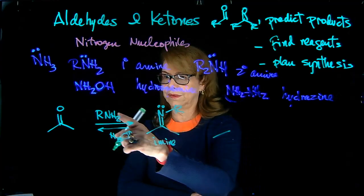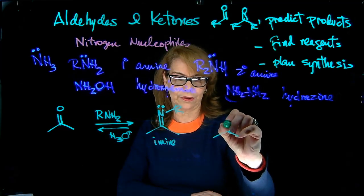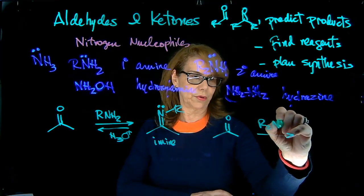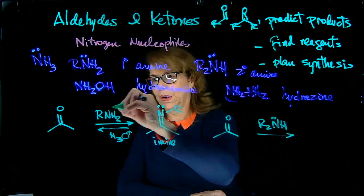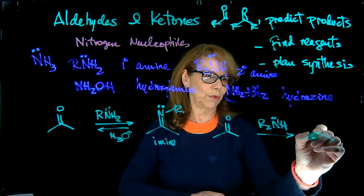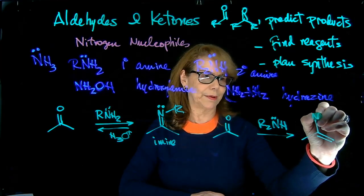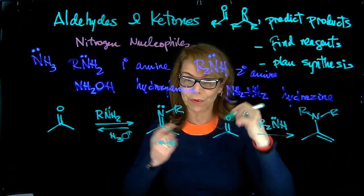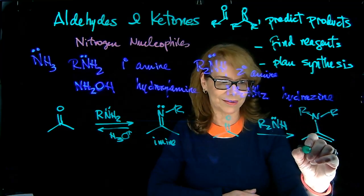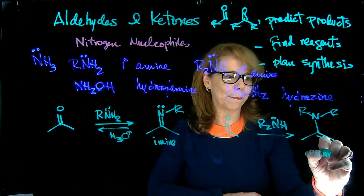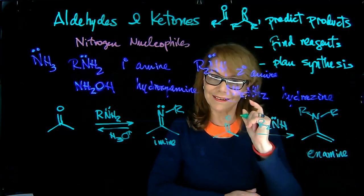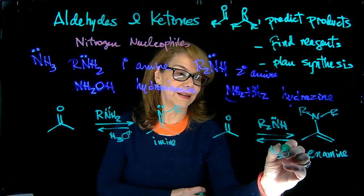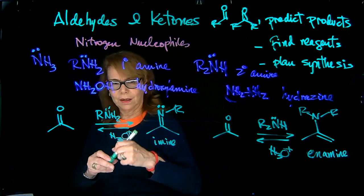Now, if you have not a primary amine, but a secondary amine as your reagent, so now we're using two R groups on only one end. Again, the product is not an imine. Instead, we're forming an enamine. And we're going to see in a minute why is that. And again, this is reversible under acidic conditions. You can hydrolyze an enamine back to the carbonyl group.